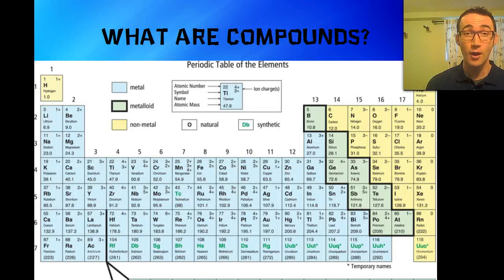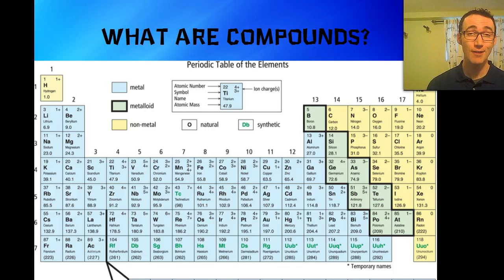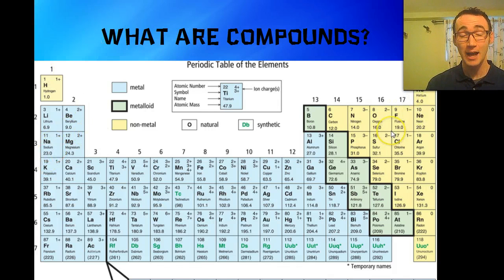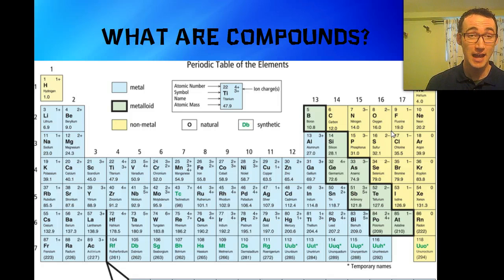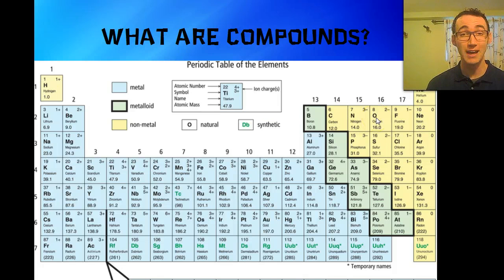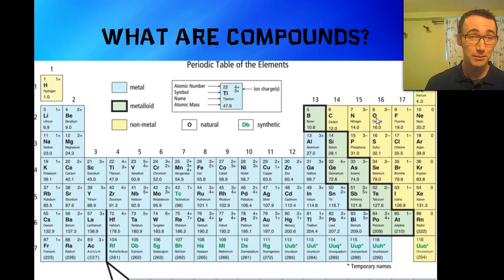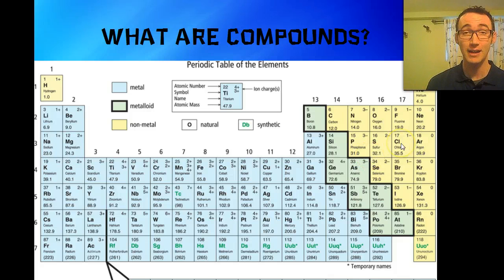So first of all, what is a compound? A compound is when you have two or more elements that come together to become one single unit. An example might be hydrogen and oxygen which come together to form water, H2O, or sodium and chlorine that come together to become sodium chloride, or table salt.